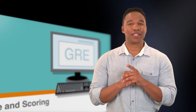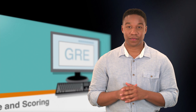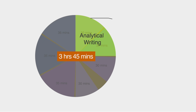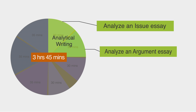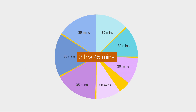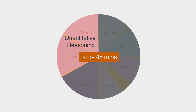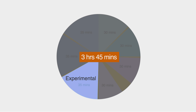Now let's look at the different sections that make up the GRE. There are seven parts in total. Every GRE begins with an Analytical Writing section. It consists of a 30-minute period for the Analyze an Issue essay and a 30-minute period for the Analyze an Argument essay. The rest of the exam is divided into five short-answer parts. There are two Quantitative Reasoning, or math, parts, two Verbal Reasoning parts, and an Experimental part, which could be either Quantitative Reasoning or Verbal Reasoning.